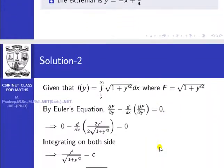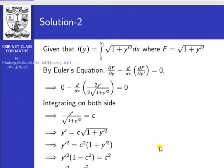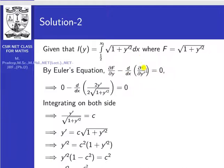First of all, how to solve this problem — the given integral's integrand is called capital F. We can apply the Euler equation. The Euler equation is: ∂F/∂y minus d/dx (∂F/∂y-dash) equal to 0. When you apply this Euler equation, our function depends only on y-dash, which is independent of x and y.